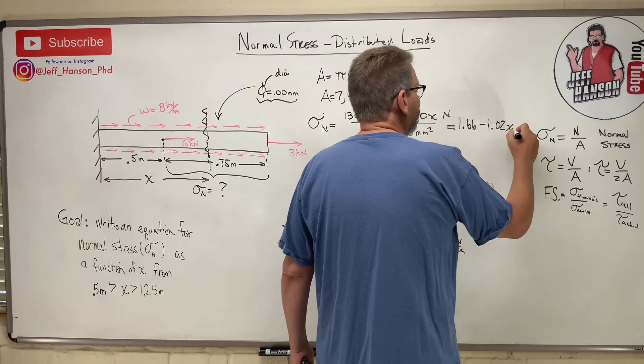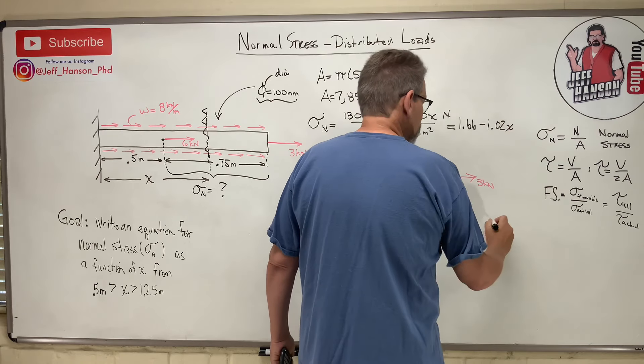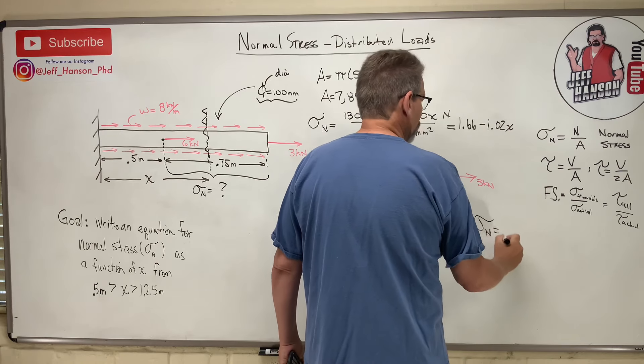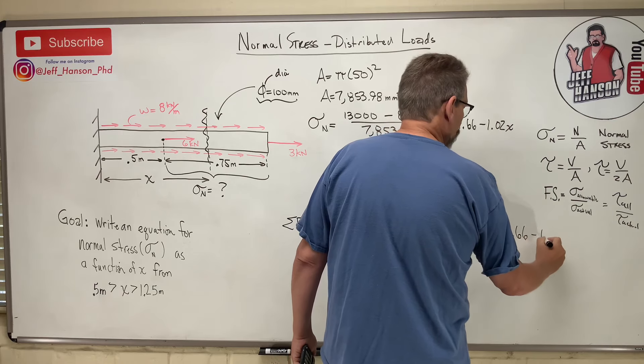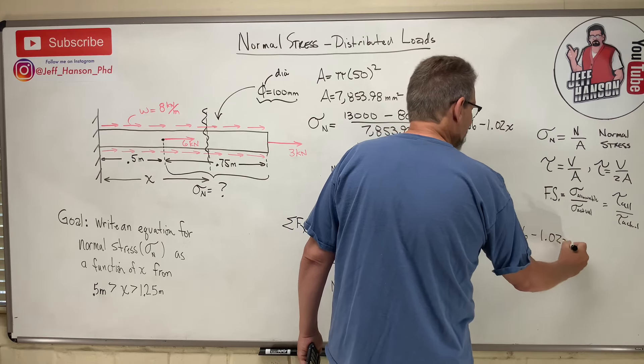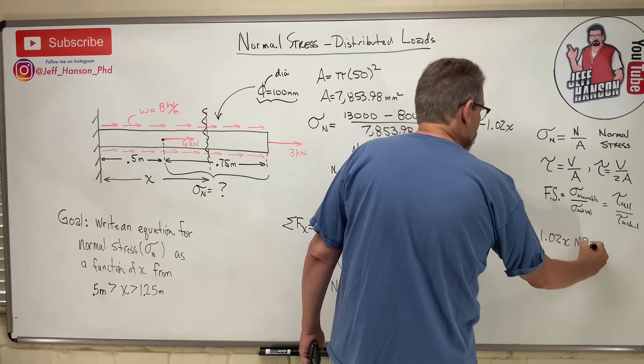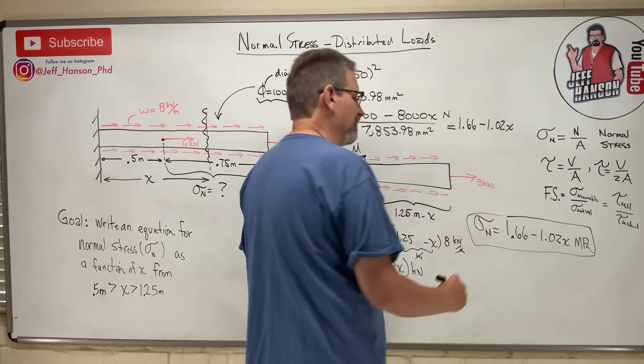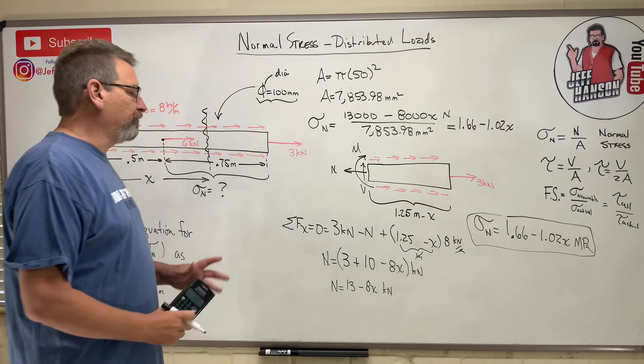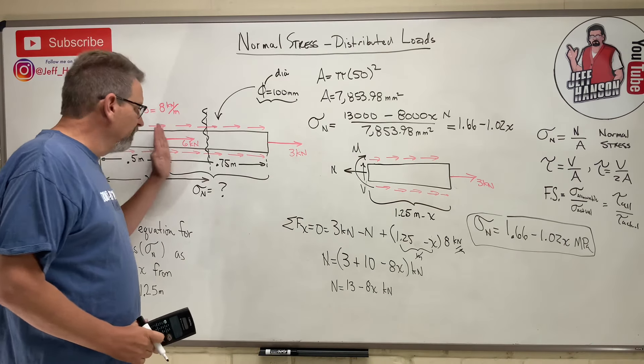And that is going to be what? Sigma N is equal to 1.66 minus 1.02 X megapascals. So there is your equation for that normal stress anywhere from here to there. That equation is valid from there to the end of the beam.